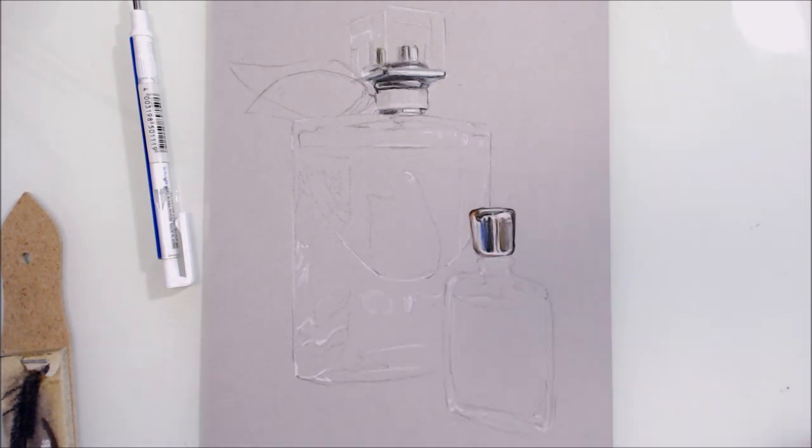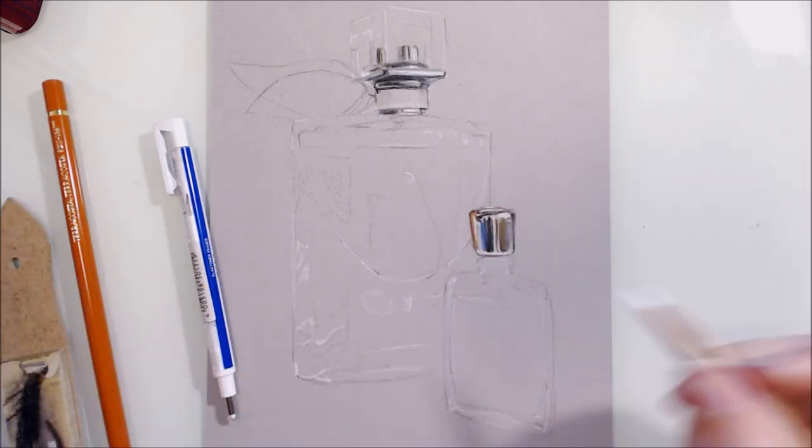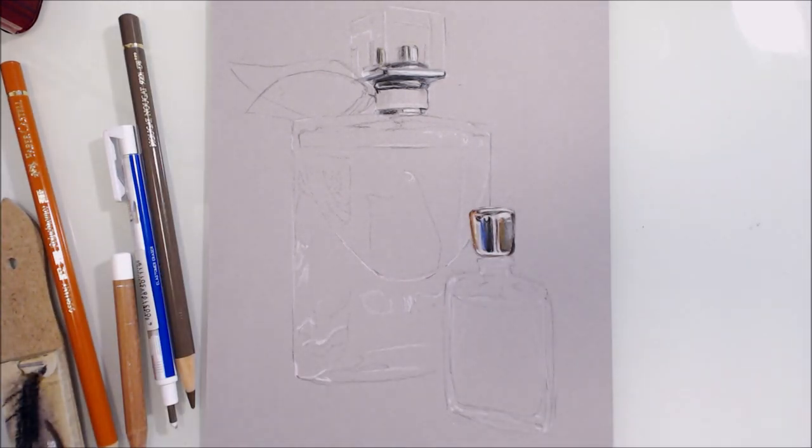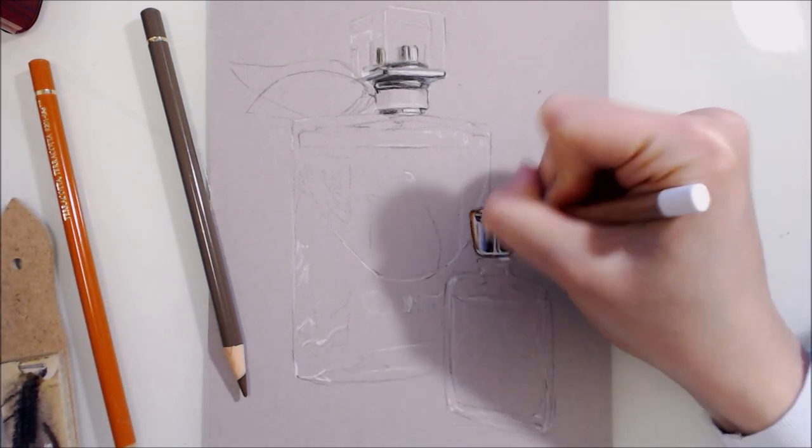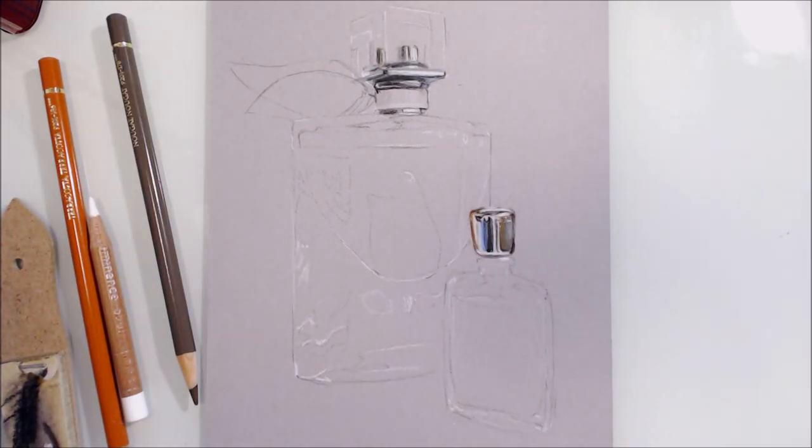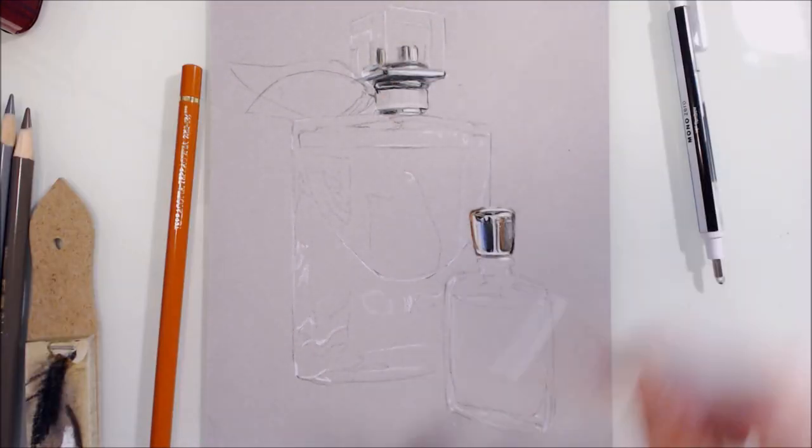It's also worth considering what colors are present in the environment that the metal is in, as these colors might make an appearance in the metal as well. For shiny metal, make sure that your contrasts are high and that your highlights pop. And for matte metal, say if it was brushed steel or unpolished metal, less light is being reflected and more light is scattered.